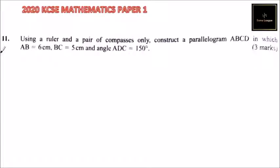Question number 11. Using a ruler and a compass only, construct a parallelogram ABCD in which AB equals 6 cm, BC equals 5 cm, and angle ADC equals 150 degrees.